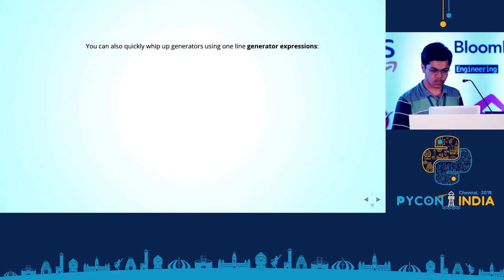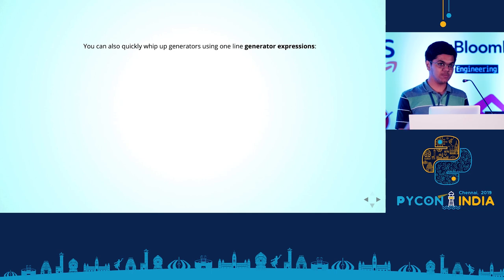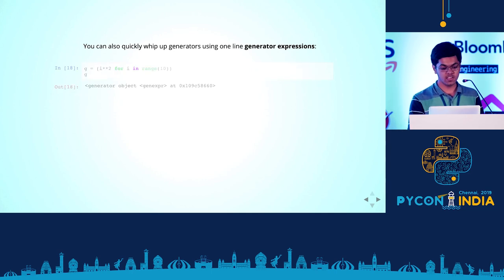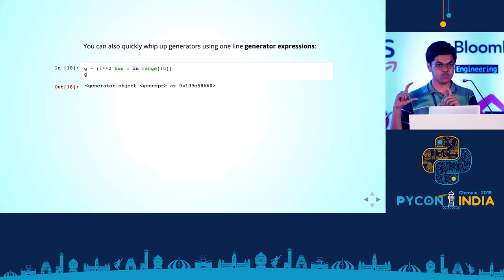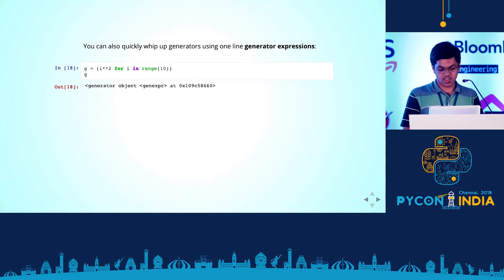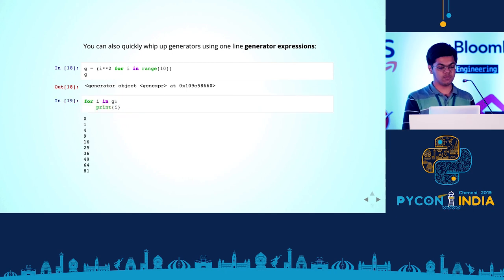A really nifty trick is that you can actually make generators using one-line generator expressions, so you don't actually have to use yield. They're basically the same as list comprehensions, with the only difference being that instead of square brackets, you use normal brackets. For example, the generator expression `i**2 for i in range(10)` gives a generator object that works exactly like the squares generator object we had before.